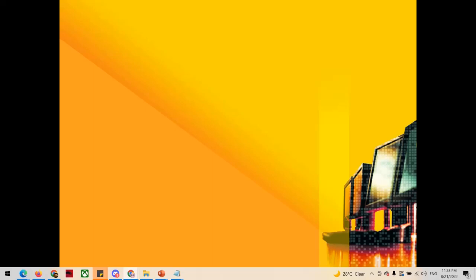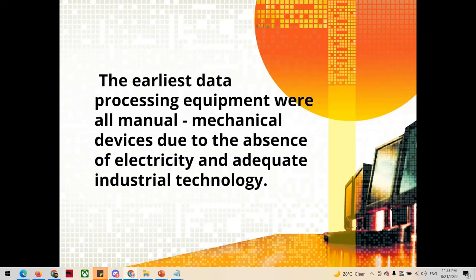Okay, let's now learn about the earliest computer. In ancient time, everything that humans did was all manual, from preparing fire, farming, and many more. This is because of the absence of electricity and resources for industrial technology.